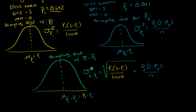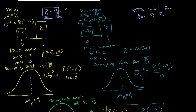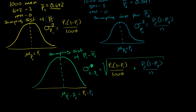All I did right now was conceptually set things up. What we now need to do is actually tackle the confidence interval — come up with a 95% confidence interval for P1 minus P2. I'll do part two in the next video, where we actually solve the confidence interval.